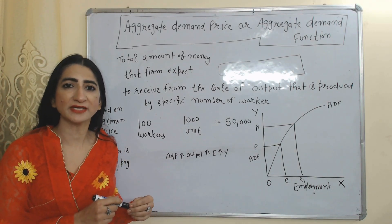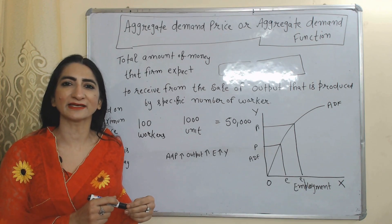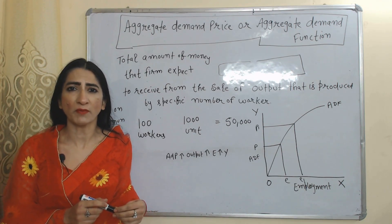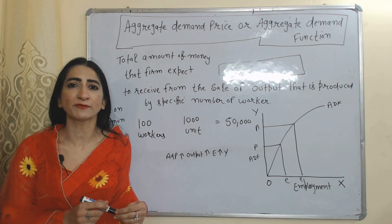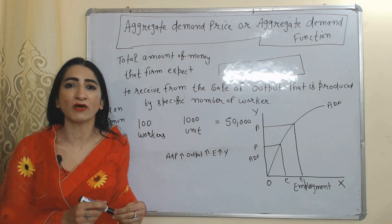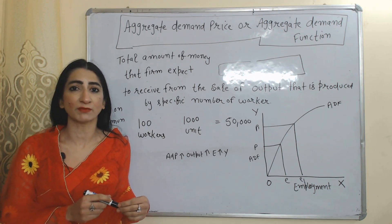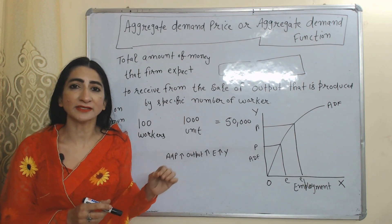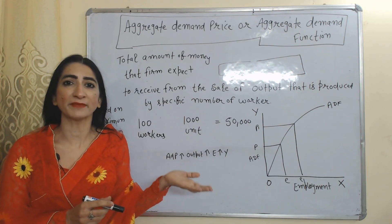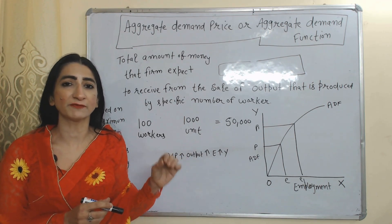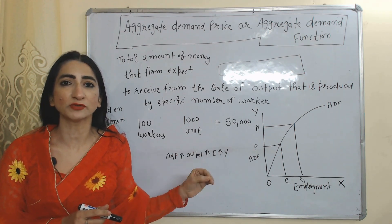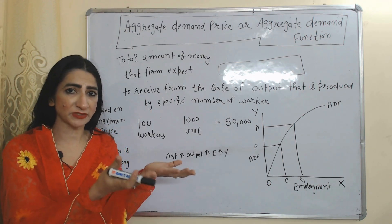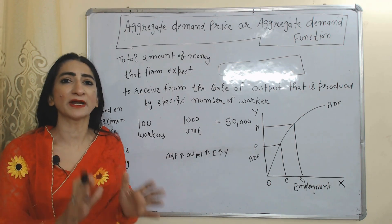First, we are going to talk about aggregate demand price, or aggregate demand function. Aggregate demand price is the total amount of money that a firm expects to receive from the sale of output produced by a specific number of workers. Whatever amount firms expect to receive depends on consumer willingness to pay for company products.